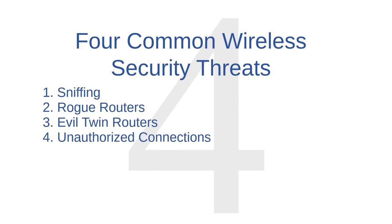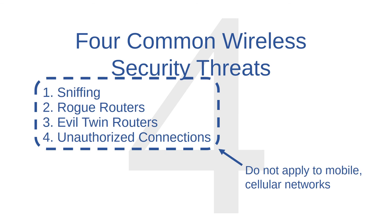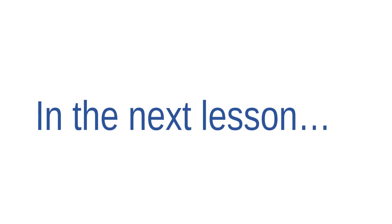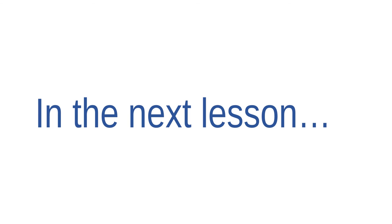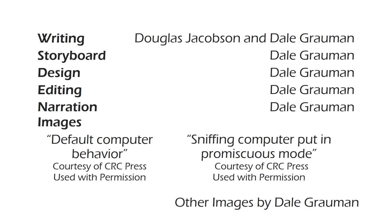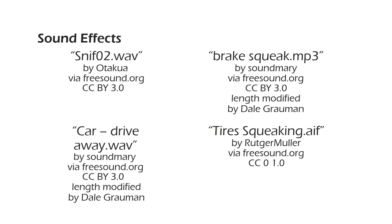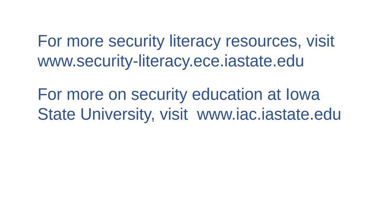Let's review. We've introduced four wireless security threats: sniffing, rogue routers, evil twin routers, and unauthorized connections. All of these threats are relevant to Wi-Fi internet connections, but they don't necessarily apply to mobile cellular networks. In the next lesson, we'll discuss public Wi-Fi connections and talk more about what you can do to use them safely.